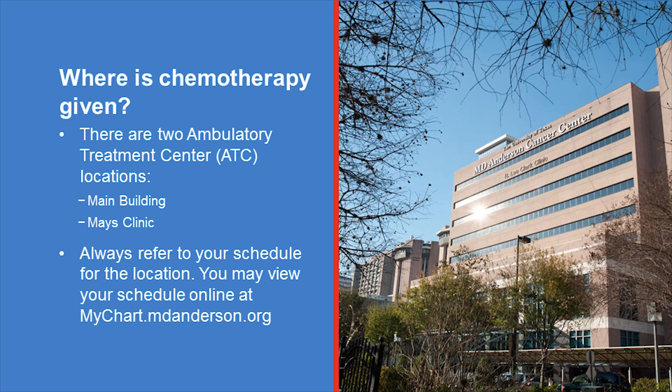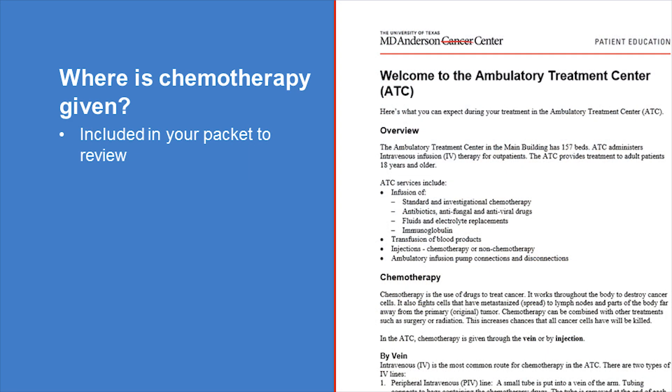Chemotherapy is usually given at an ambulatory treatment center, or ATC. Your chemotherapy infusion appointments will appear on your schedule that you can access through MyChart online. While printed copies of your appointments are available, schedules listed on MyChart are updated in real time. For more information about the location and process of receiving treatment in the ATC, ask your healthcare team or refer to the handout entitled Welcome to the Ambulatory Treatment Center.